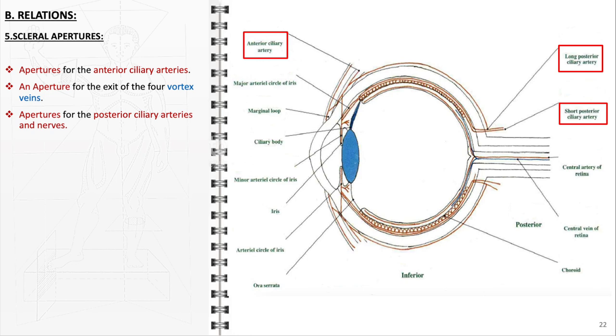Additionally, the sclera contains apertures for the posterior ciliary arteries and nerves. These are vital for providing the posterior segment of the eye, including the retina and choroid, with necessary blood flow and nerve supply.